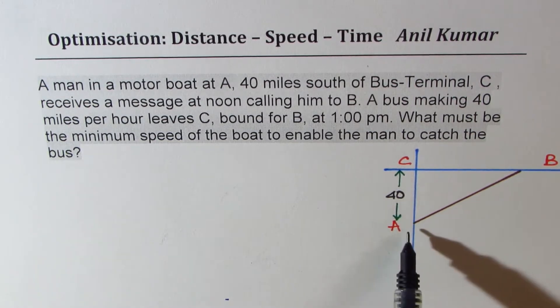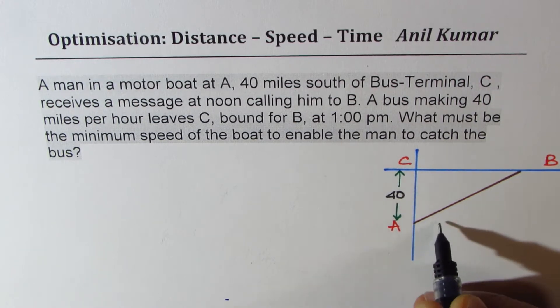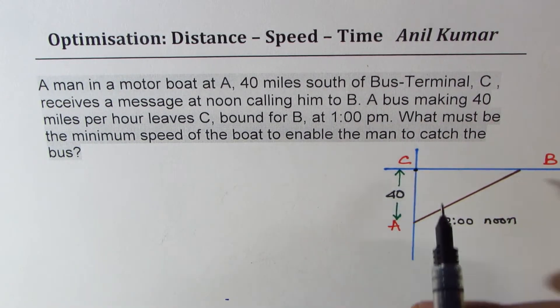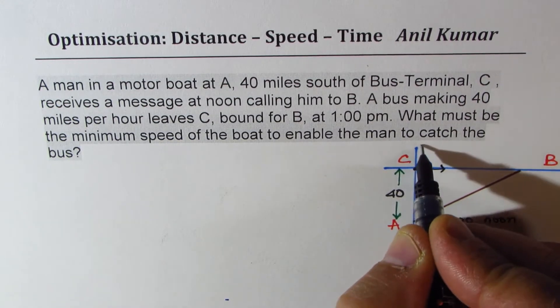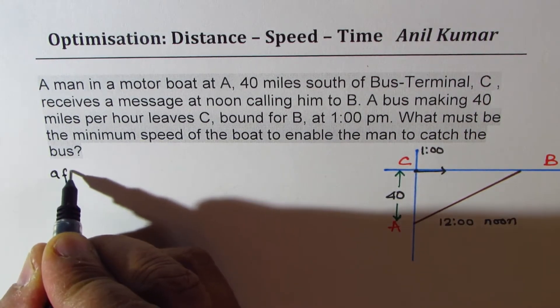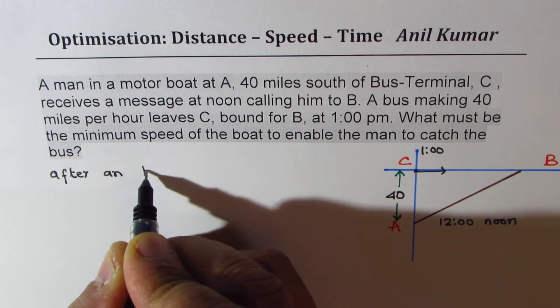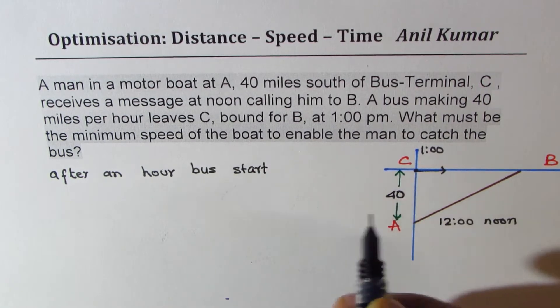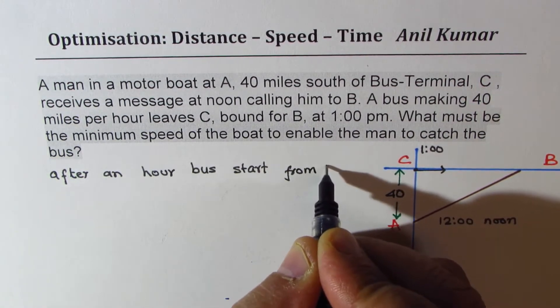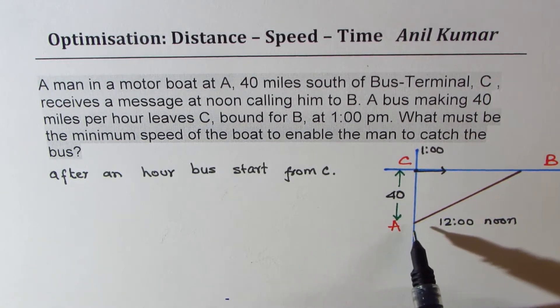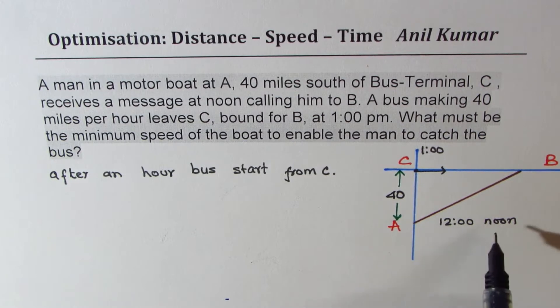So the person here in a boat receives a message at 12 noon. The bus starts in this particular direction at 1 p.m., that means after an hour. It is important to note that after an hour, the bus starts from C. Since the person in the boat knew that it is going in that direction, the person in the boat will start at 12 noon.